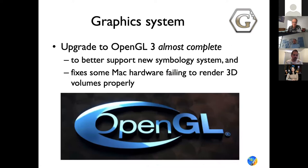Apple computers in particular now require the OpenGL 3 core. Unfortunately, that is not backward compatible with the old OpenGL 1 and 2 that has been used in many places in G-Plates. So we are now being forced to upgrade our entire graphics engine. The good news is that OpenGL 3 will enable us to implement better symbology, something that users have called for for a long time.